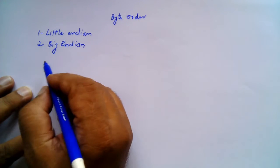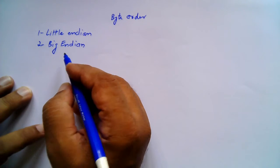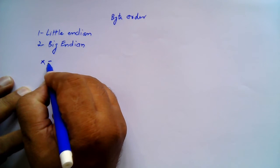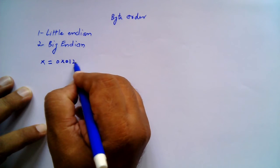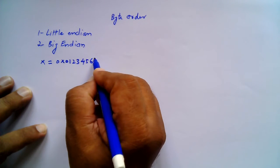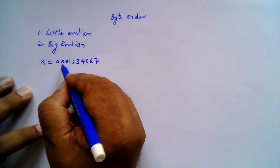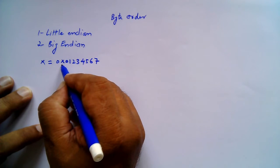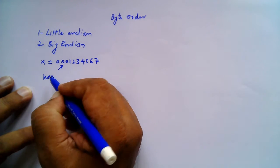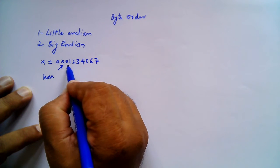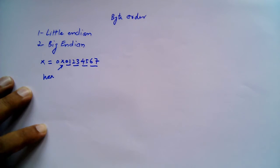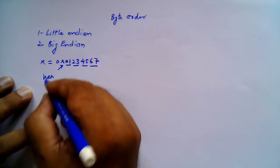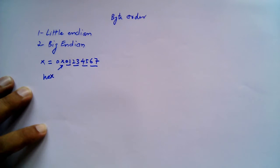To explain both these methods, let's consider a hexadecimal number — for example, 0x01234567. The '0x' prefix indicates this is a hexadecimal number. This is a four-byte, 32-bit number, so we need four bytes of memory to store this data.